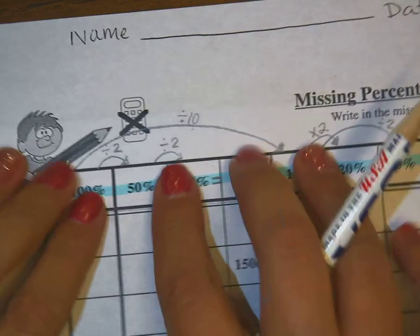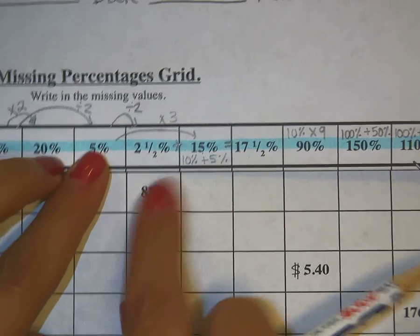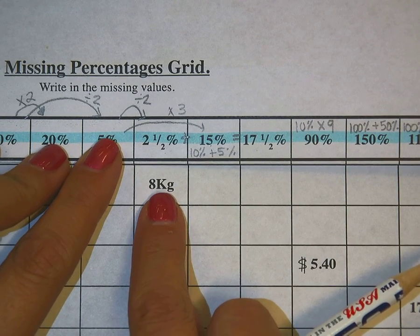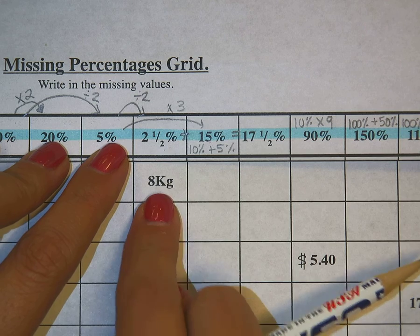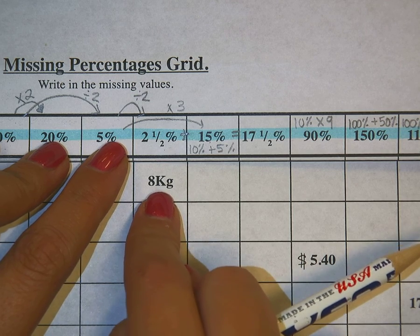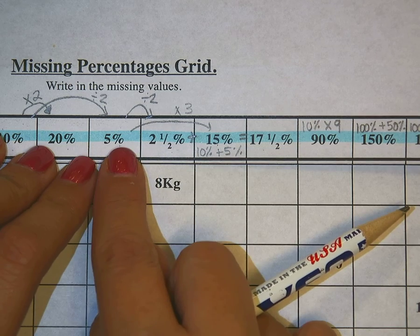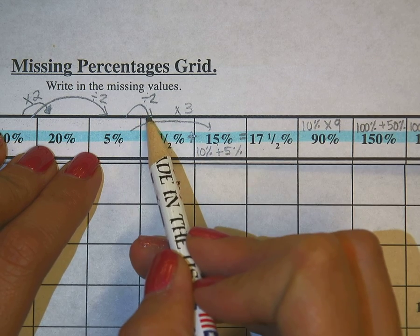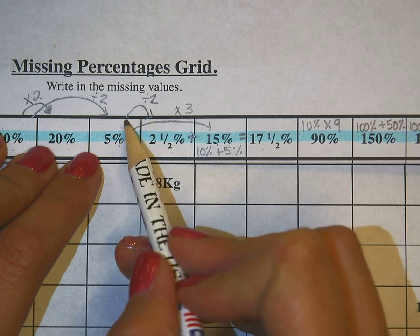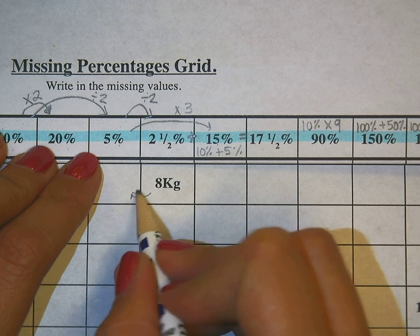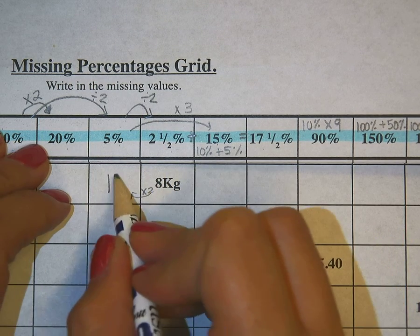So number 6 only tells me what 2.5% is, and 2.5% is 8. So then I have to work backwards and think about, okay, if I know 2.5, I can figure out 5, and doing the opposite of dividing by 2 would be multiplying by 2. So I need to do 8 times 2, which is going to give me 16.